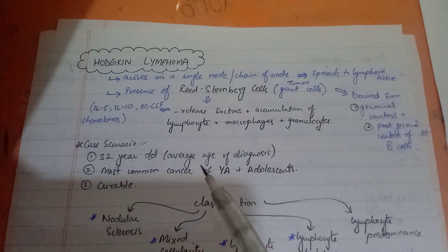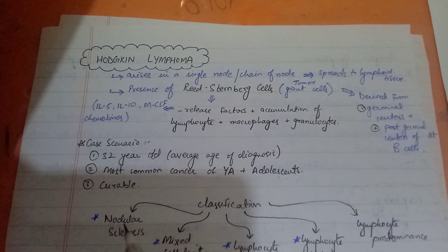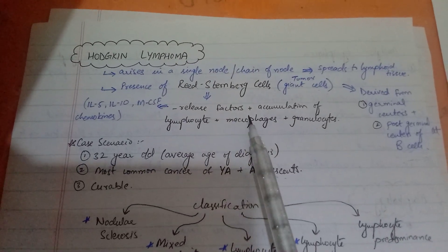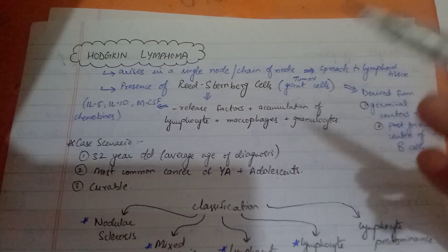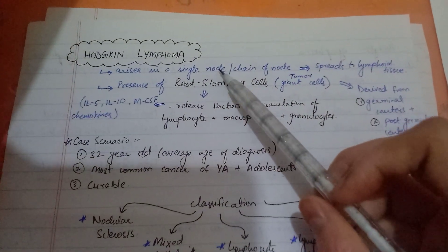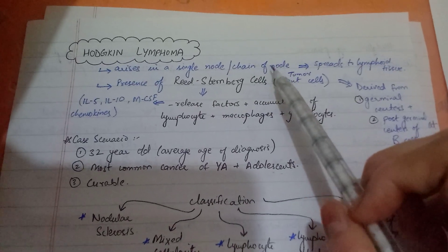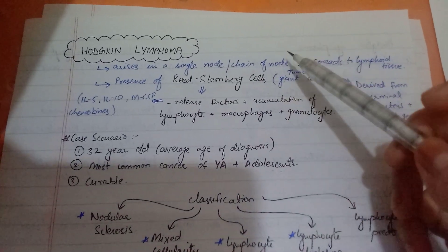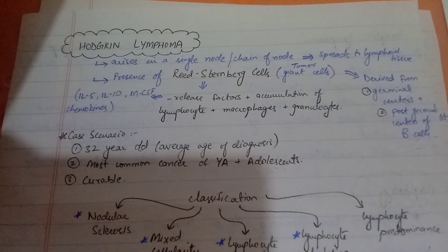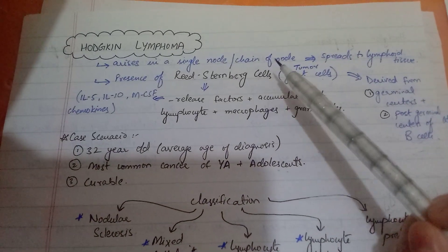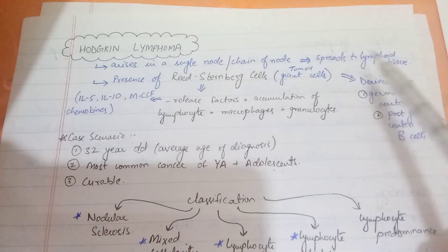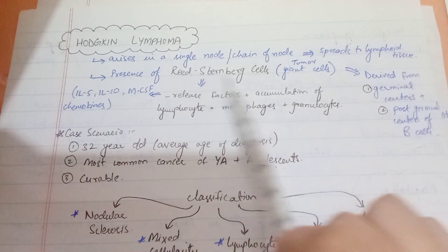One of the main important things about Hodgkin's lymphoma is that it arises in a single node or in a chain of nodes — meaning a cervical chain or aortic chain. It arises in a single node and spreads to lymphoid tissue.